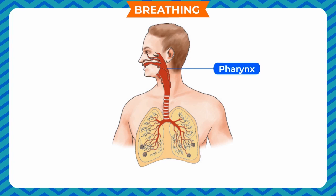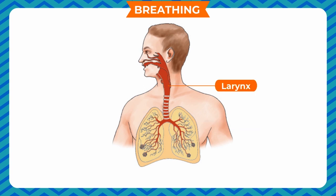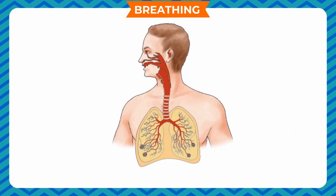From the pharynx, air goes into the trachea or windpipe. The trachea then branches into two thin tubes called bronchi, which lead into the lungs. The larynx, which is the voice box, is situated between the pharynx and trachea. Larynx is a small air passage formed by cartilage, and two folds of tissues present in it produce sound.